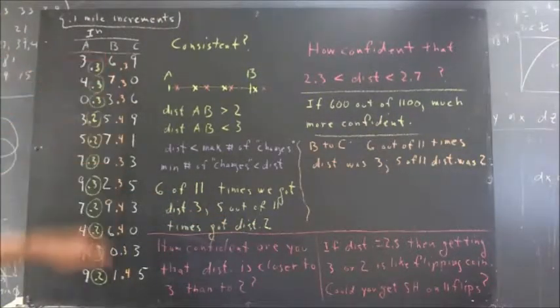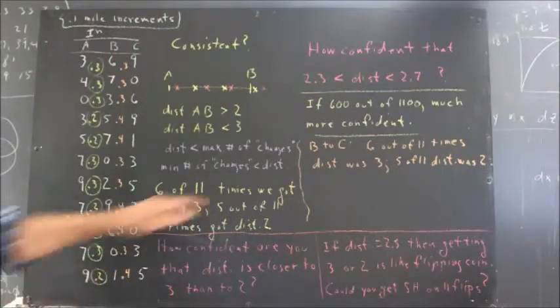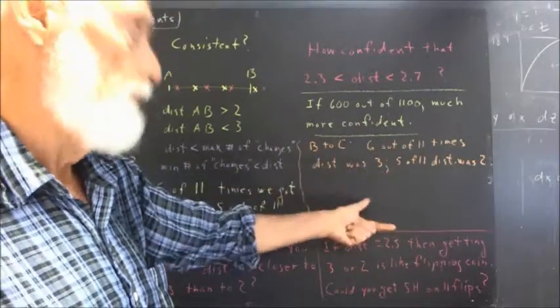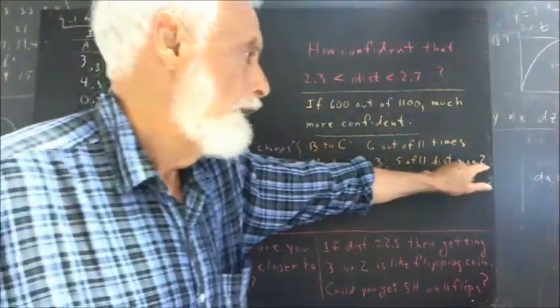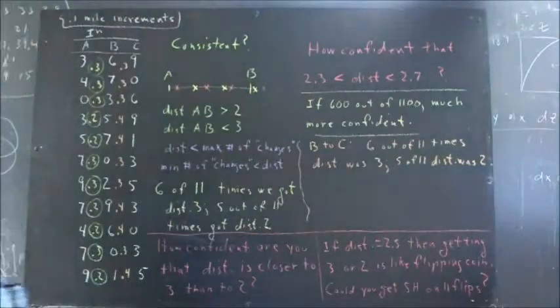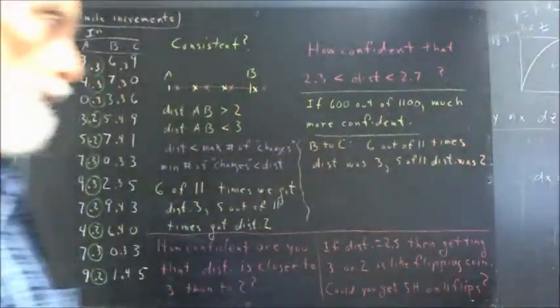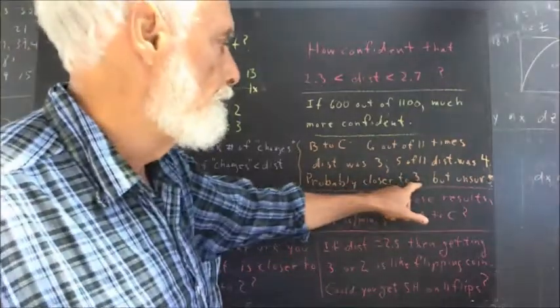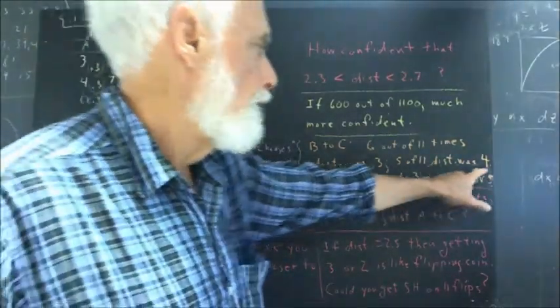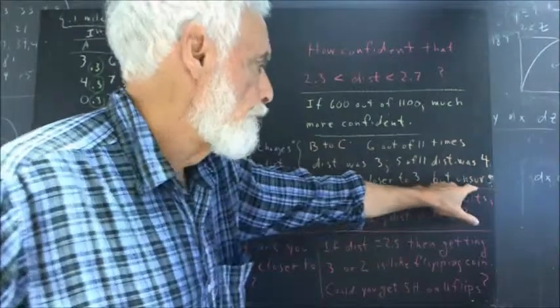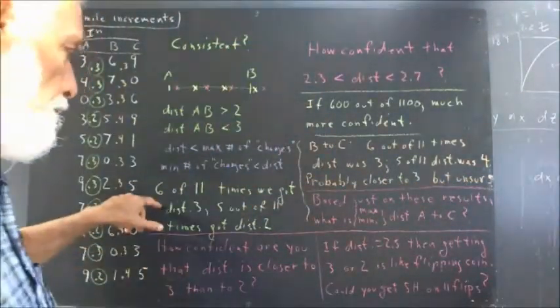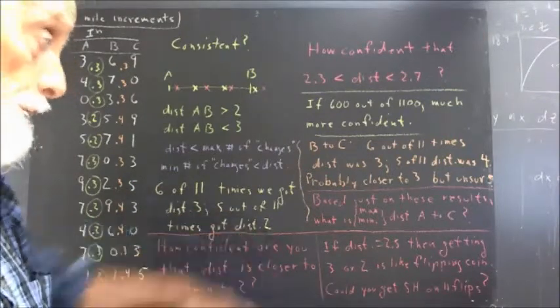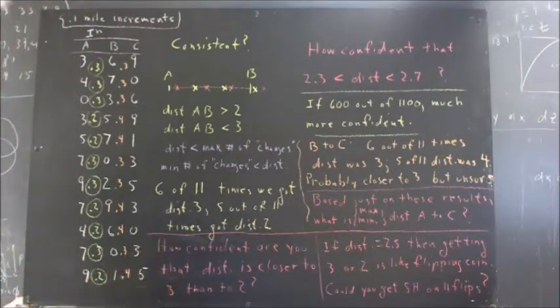If I've done these correctly, we find that going from B to C, 6 times out of 11, the distance was 3 tenths. 5 times out of 11, the distance was 4 tenths. So the distance is probably closer to 3 tenths than to 4 tenths, but again, we're just as unsure as we were over here.